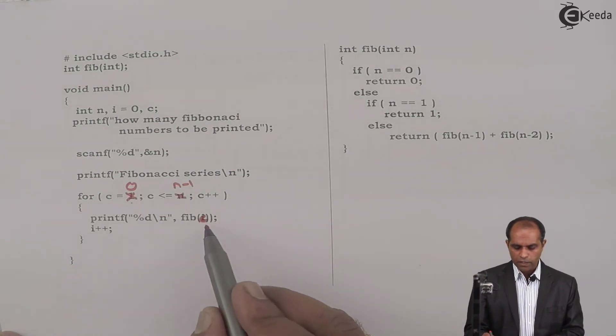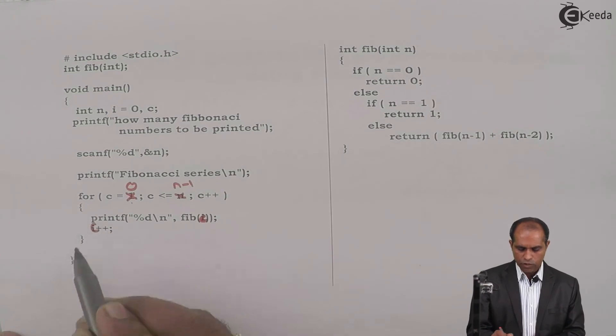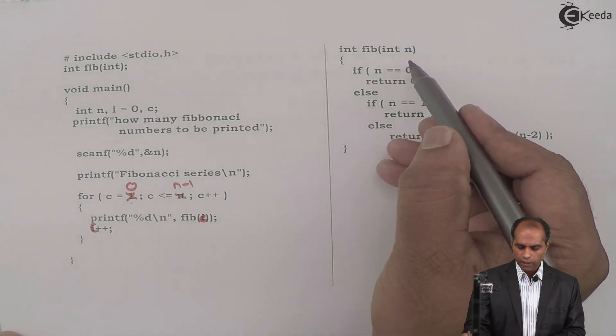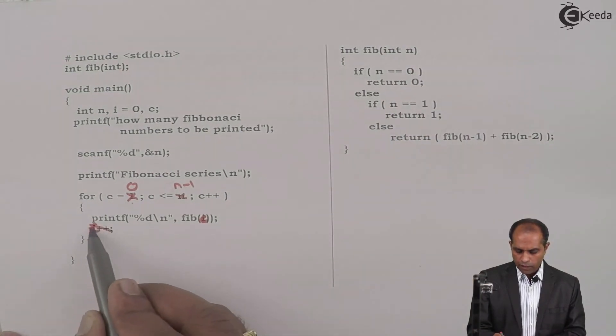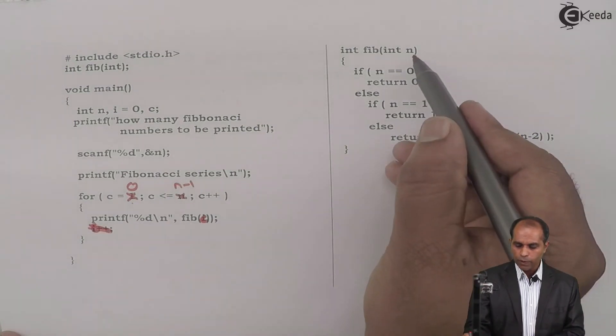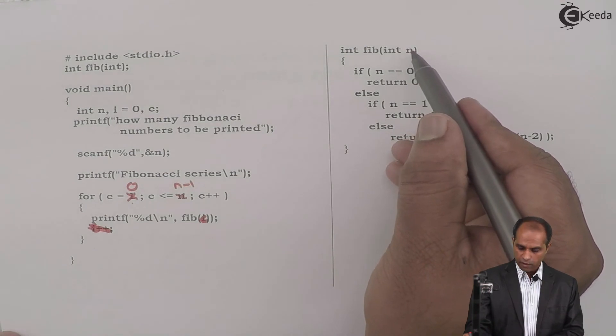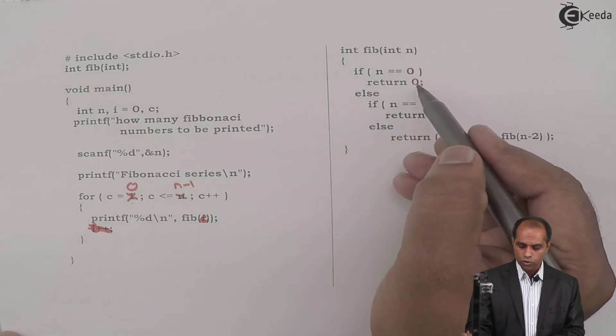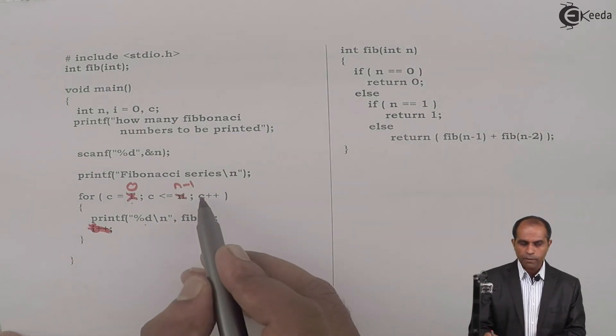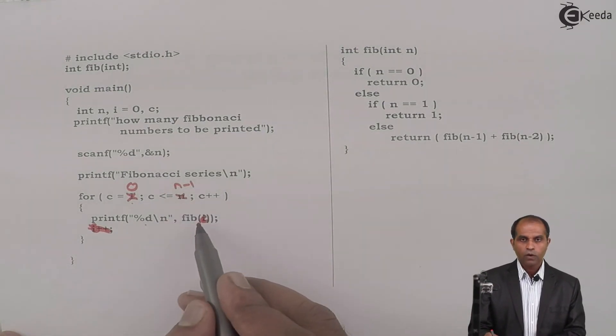I'll say n minus 1, c plus plus. The same value is being passed c, and you can take this also as c plus plus. So Fib of c, what is c? c is 0. Go to this particular place. Since c plus plus is incremented, you can avoid writing this instruction. Fib of c, c is 0. Go to this place, c gets copied onto n. n is 0. 0 equal to 0, true. Return 0. That gets printed as 0. Then go back, c becomes 1.